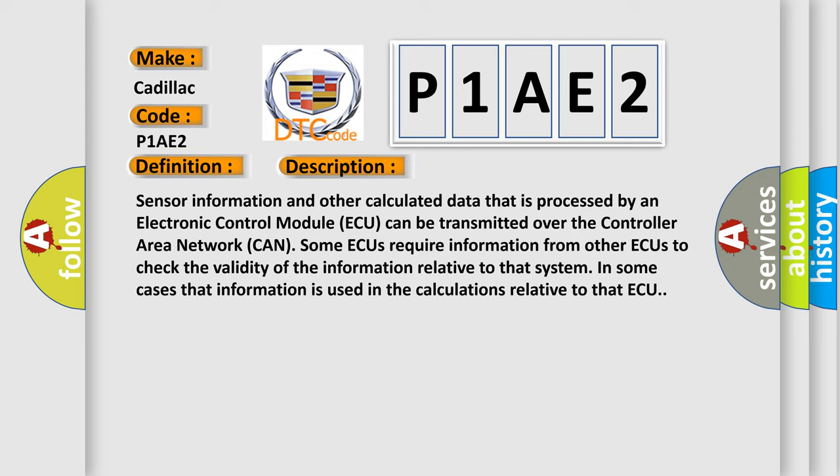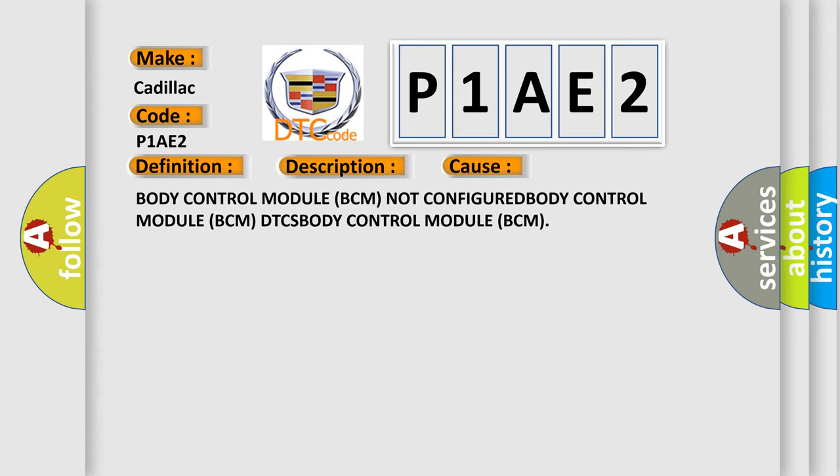Sensor information and other calculated data that is processed by an electronic control module ECM can be transmitted over the controller area network CAN. Some ECMs require information from other ECMs to check the validity of the information relative to that system. In some cases, that information is used in the calculations relative to that ECM. This diagnostic error occurs most often in these cases.